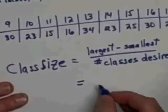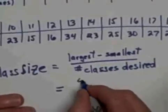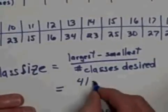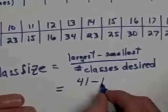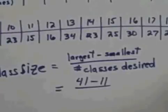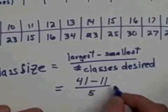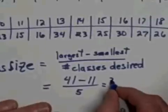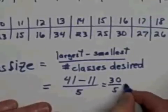The class size is going to be equal to the largest, 41, minus the smallest one, which is 11. And since I decided I arbitrarily wanted five classes, we'll divide this by five. So this becomes 30 divided by five, which is six.